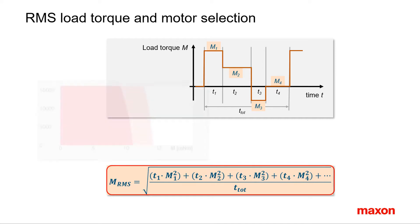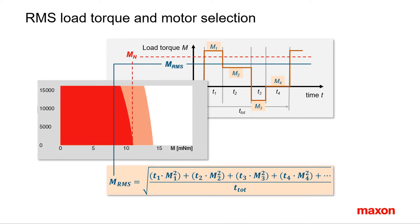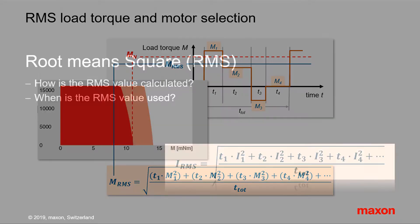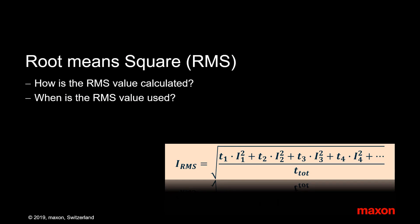For motor selection, the RMS torque value must be smaller than the maximum permissible continuous or nominal torque. That's the right limit of the red continuous operating range. That's it. You should know now that the RMS load value gives the average thermal load for operation cycles, and that the calculation goes just as the name indicates: take the root of the mean value of the time-weighted square load.